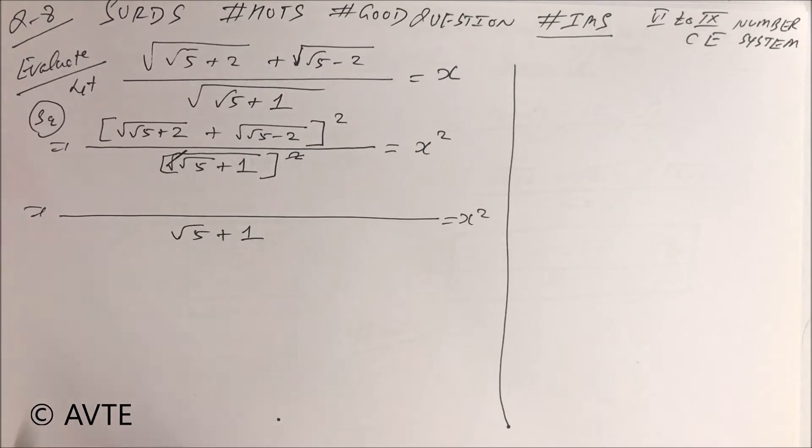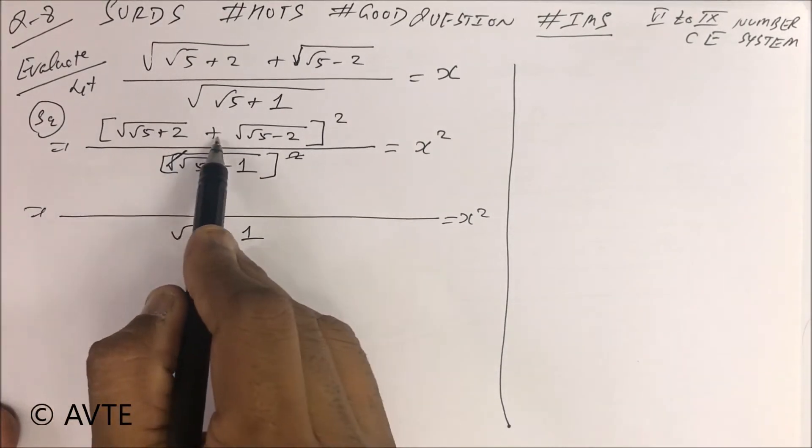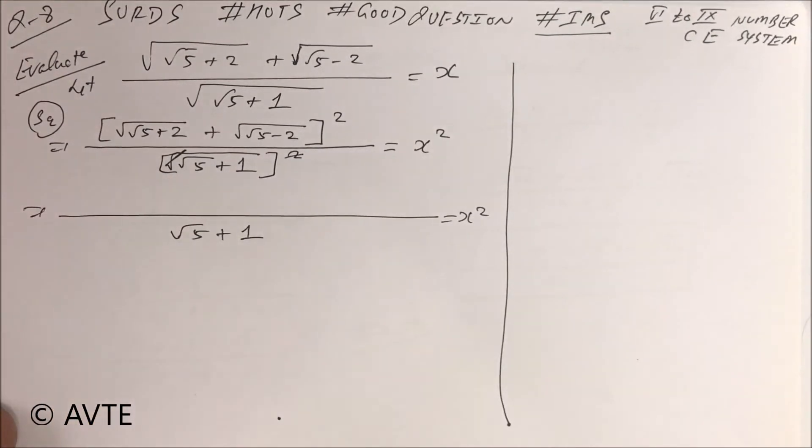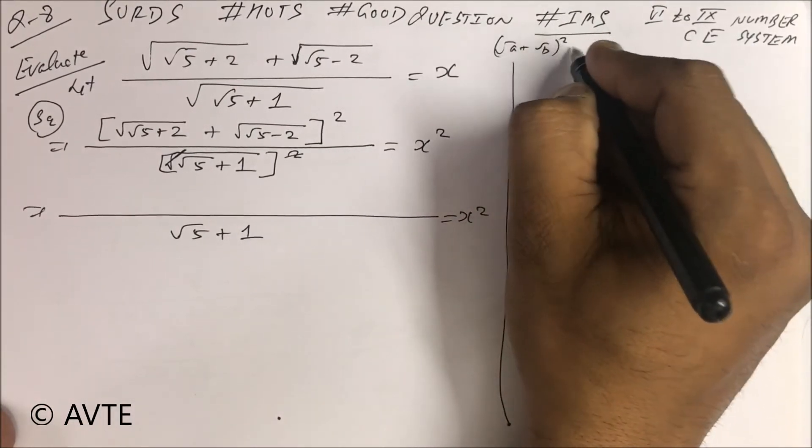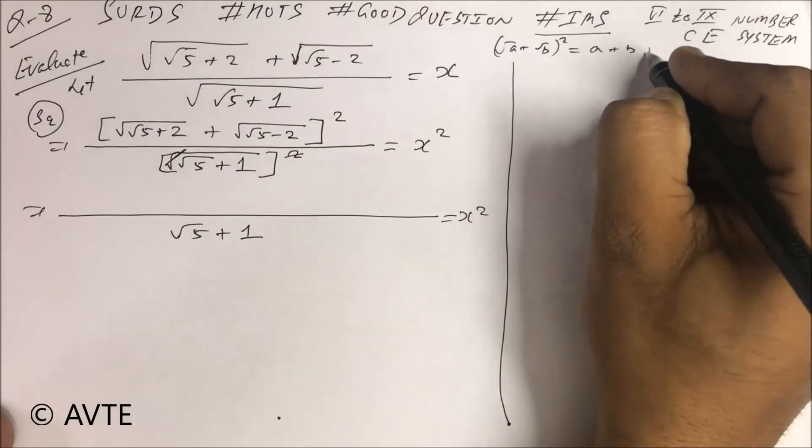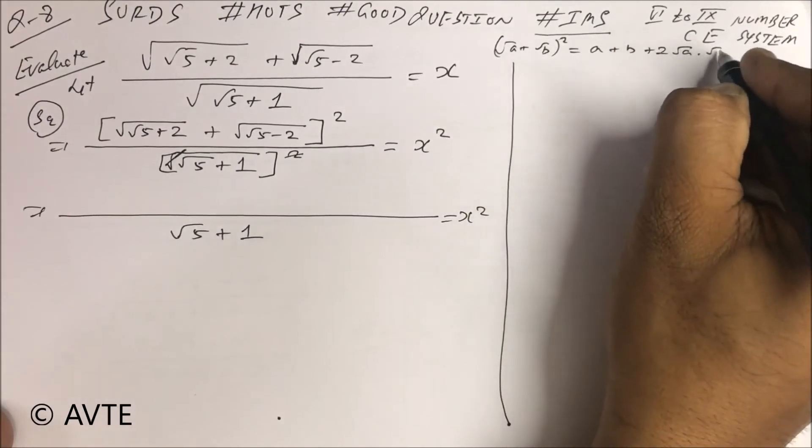Now this is considered as (√A + √B)². What is that? (√A + √B)² is A + B + 2√(A·B).